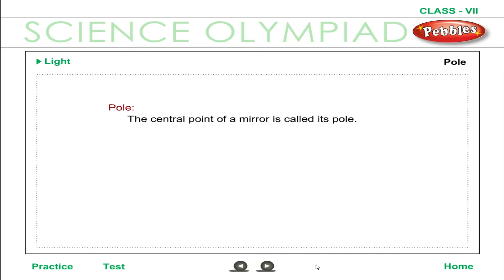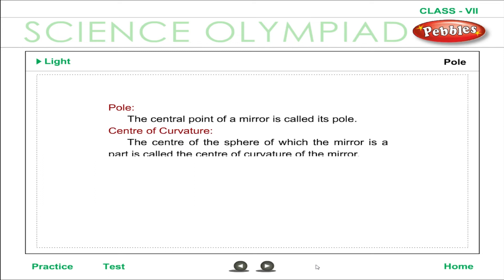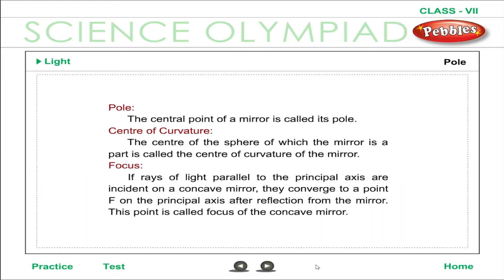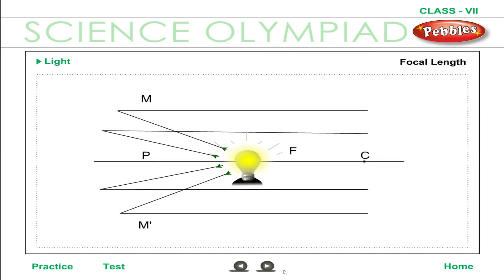Key terms for spherical mirrors: Pole — the central point of a mirror is called its pole. Center of curvature — the center of the sphere of which the mirror is a part. Focus — rays of light parallel to the principal axis, incident on a concave mirror, converge to a point F on the principal axis after reflection; this is the focus. Focal length — the distance FP between the focus F and the pole P. If a point source is placed at the focus of a concave mirror, reflected rays emerge parallel to the principal axis.